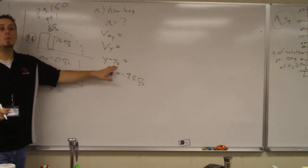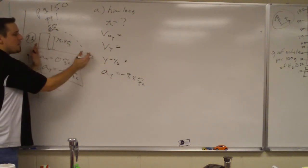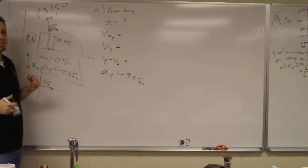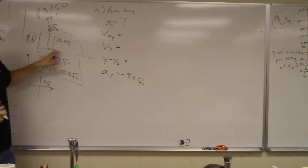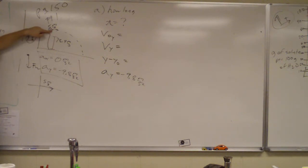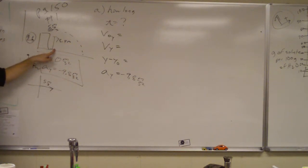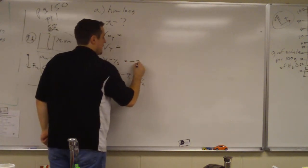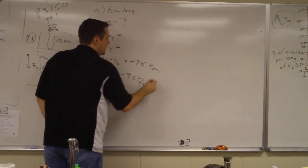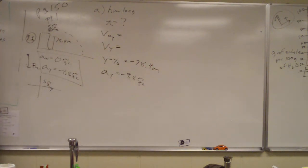So displacement in the y direction. That doesn't mean how far in the x direction like from the base of the cliff. The displacement in the y is going from here to where? The bottom, the ground. So how far do we go down? 78.4 meters. We went 78.4 meters down. So the displacement, positive or negative? Negative.